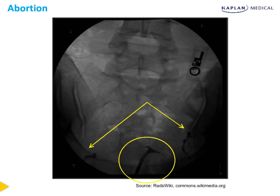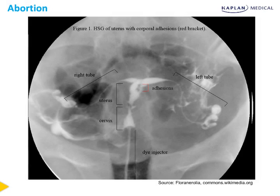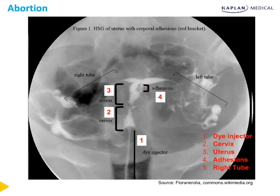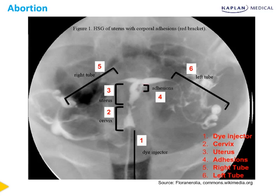We see normal fill and spill of the fallopian tubes bilaterally indicated by the arrows. Another anatomic cause of spontaneous abortion is intrauterine adhesions. On hysterosalpingogram, we see the dye injector, the cervix, the uterus with adhesions inside, and the right and left tubes with filling and spilling of dye into the pelvis on either side. Another name for intrauterine adhesions is Asherman syndrome, which is a possible result of vigorous dilation and sharp curettage.